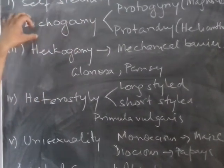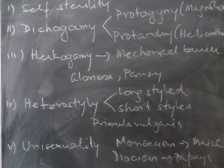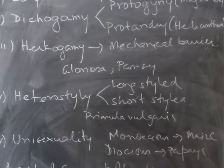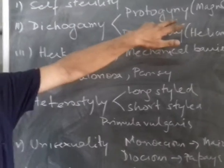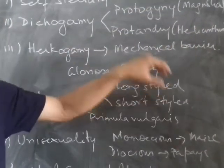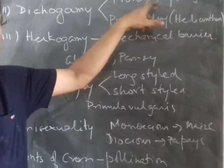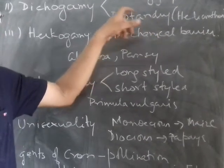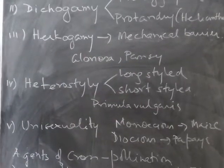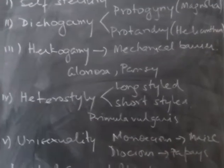Another contrivance is dichogamy, where the anther and stigma mature at different times, reducing the chance of self-pollination. If the gynoecium matures earlier, it is called protogyny — found in Magnolia. If the androecium matures earlier than the gynoecium, it is called protandry — found in Helianthus (sunflower). Both conditions naturally lead to cross-pollination.